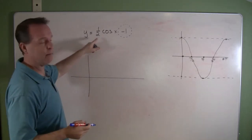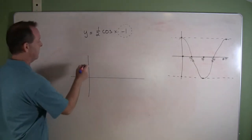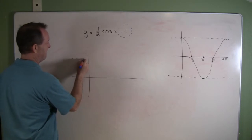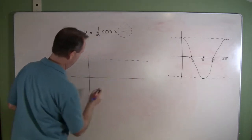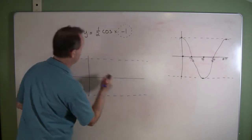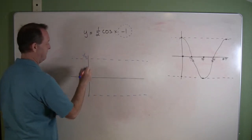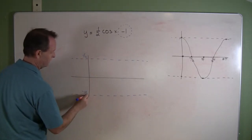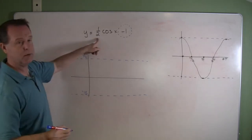So we know that our amplitude is one-half. So let's go ahead and draw our one-half markers on here. I'll label this as a positive one-half and a negative one-half. So we have our amplitudes defined.